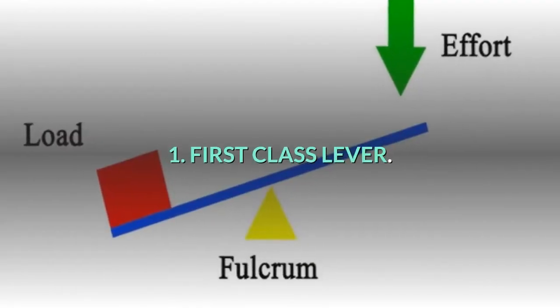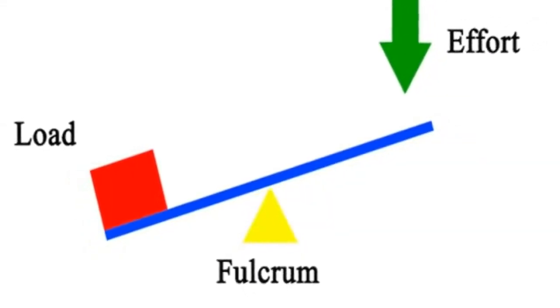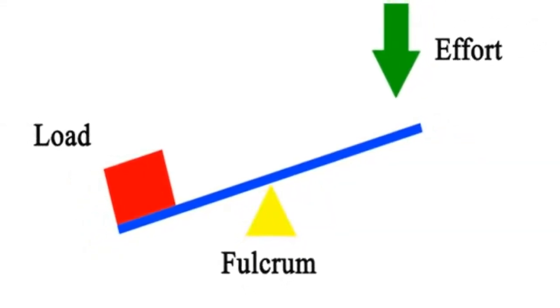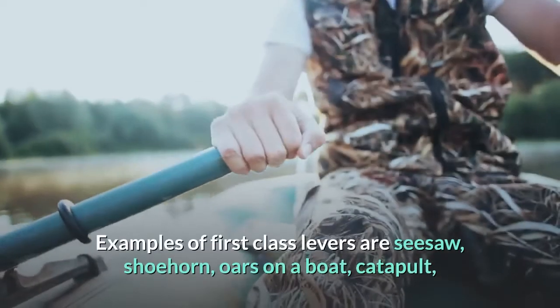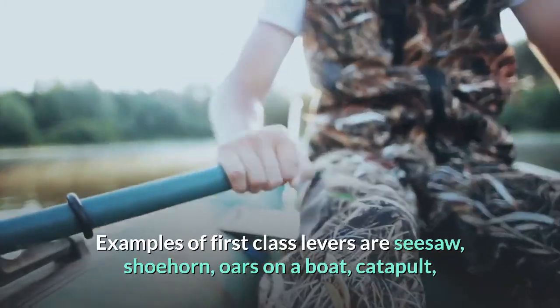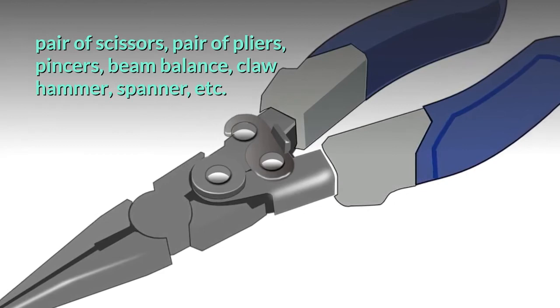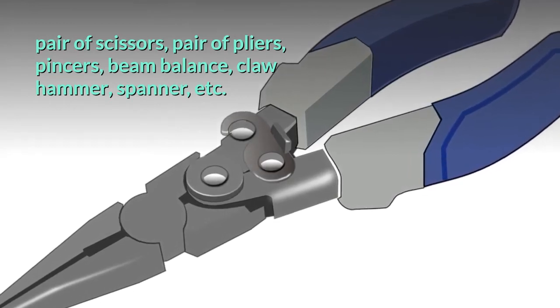First class lever: A first class lever is a lever that has the pivot between the load and the effort. Examples of first class levers are seesaw, shoehorn, oars on a boat, catapult, pair of scissors, pair of pliers, pincers, beam balance, claw hammer, spanner, etc.